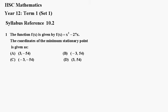Question 1. The function f(x) is given by f(x) = x³ - 27x. The coordinates of the minimum stationary point is given as: (a) (3, -54), (b) (-3, 54), (c) (-3, -54), or (d) (3, 54).